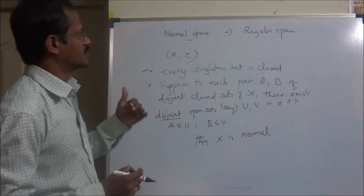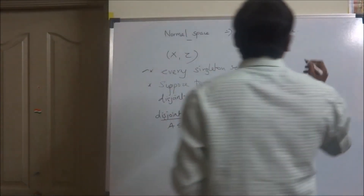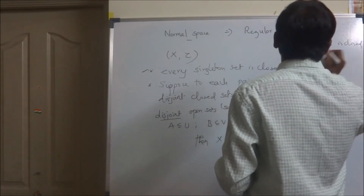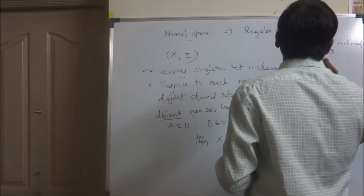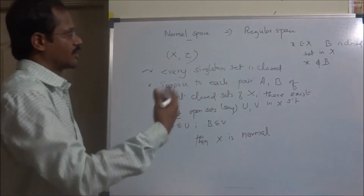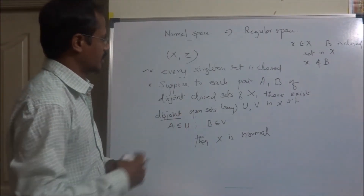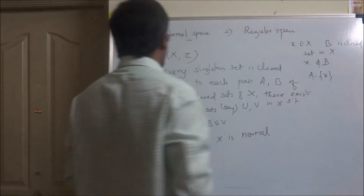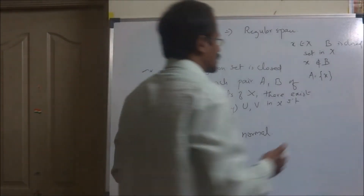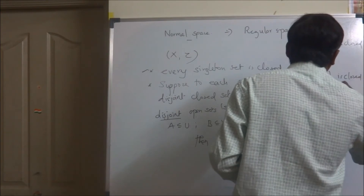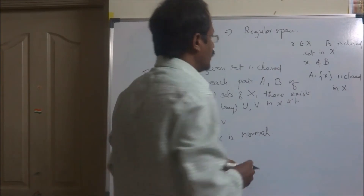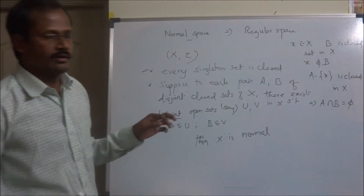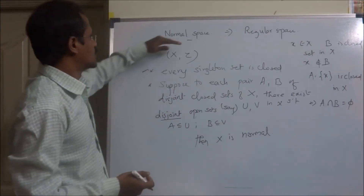The first condition for a space to be regular is satisfied. Now consider an arbitrary point x in X and a closed set B in X with x not in B — that is, a closed set not containing the point x. If we set A equal to the singleton {x}, then using the property that every singleton set is closed, A and B are disjoint closed sets in X.